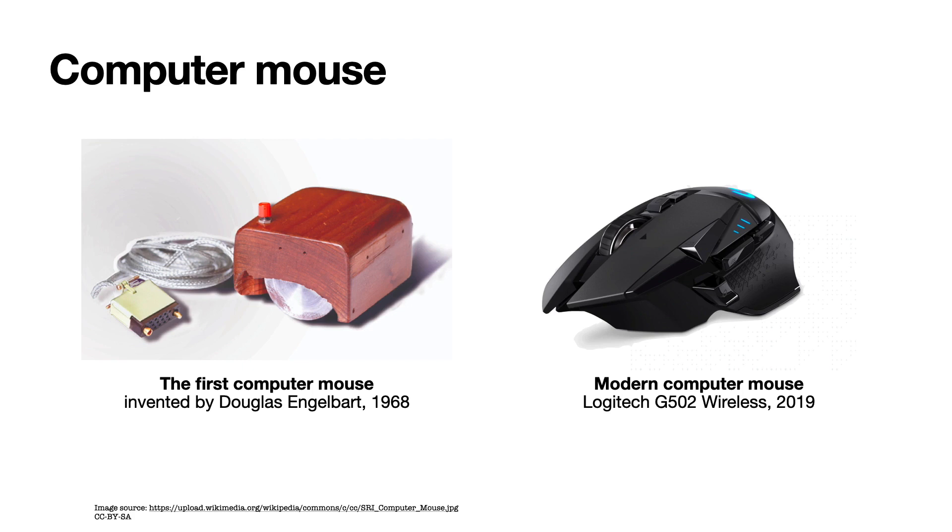In 1968, Douglas Engelbert invented the first computer mouse, and it has dominated as a major pointing device. Even though there were lots of improvements in terms of technology, the key role of a computer mouse is always controlling a cursor, which is basically a point.